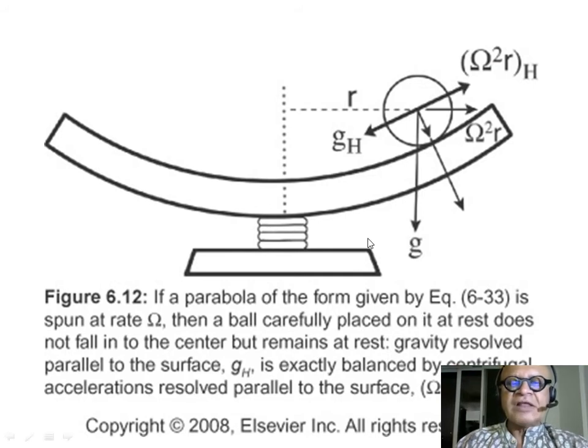But, because you have omega squared r acting perpendicular to this, it has to produce a component along this direction and g has to have a component along this direction to keep the object—hockey puck, ball bearing or whatever—in balance. So, gravity resolved parallel to the surface is gh. Because the surface is curved this way,